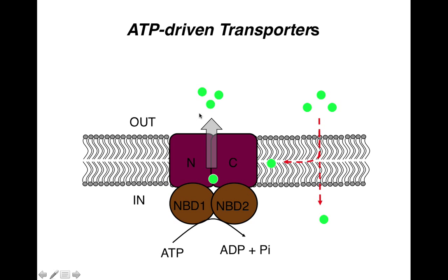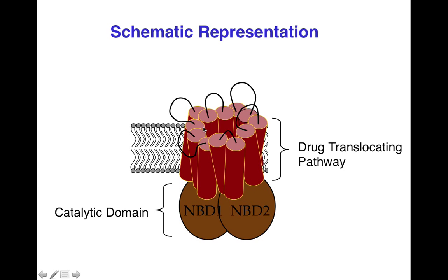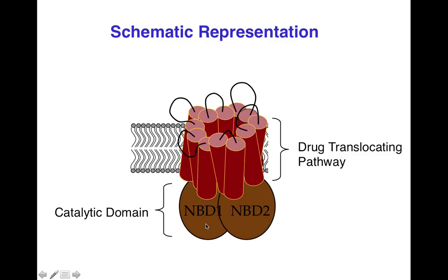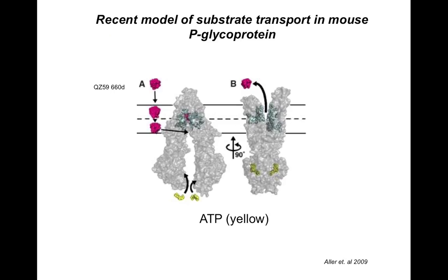The transmembrane alpha helices come together to form the drug translocating pathway, or a pore-like structure, through which the drug is effluxed. The NBDs form the catalytic domain where ATP is bound and hydrolyzed, providing the power to efflux the substrate out of the cell.